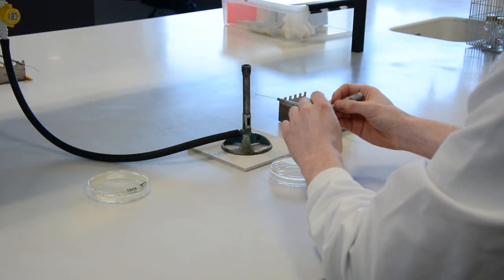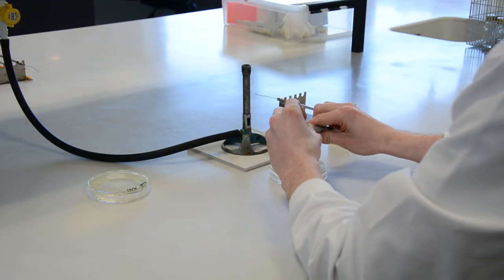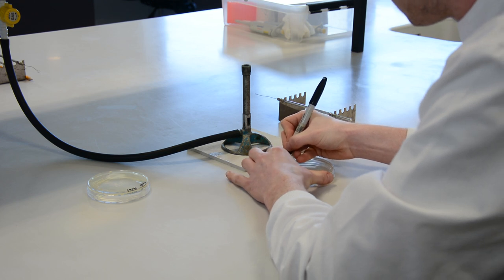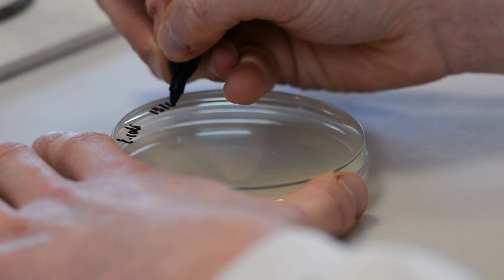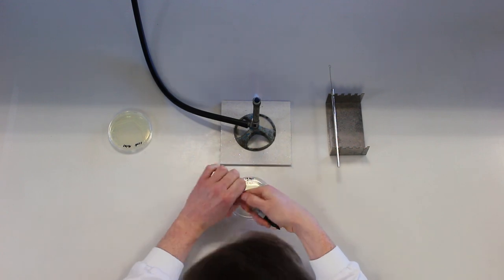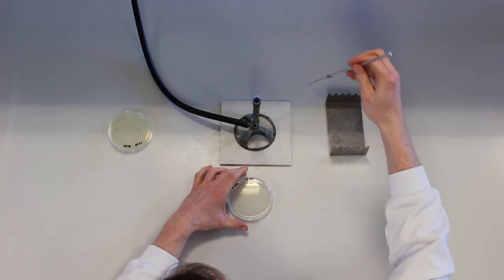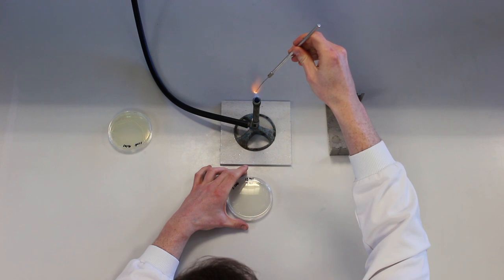First, you label your equipment with the date, the name or source of the microorganism, your name, and your group or class identifier if appropriate. These are written around the edge of the base of the plate containing the agar so as not to obscure the growth on the plate. We write on the base so that if the lid of the plate is lost, the culture can still be identified.